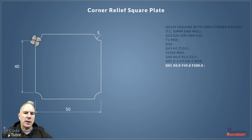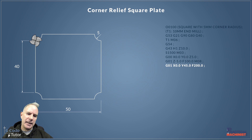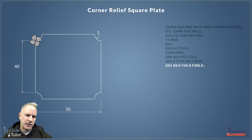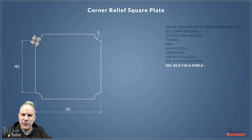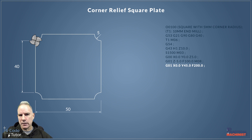Another G01 line — we could have omitted the G01 since once it's active it stays active, but I've added it again for simplicity. On this line we're moving up to the start position of our first female radius, and we've increased the feed rate. That first feed rate was a plunge feed rate coming down in Z. Now we're cutting along in X and Y so we can go as fast as the tool will allow.